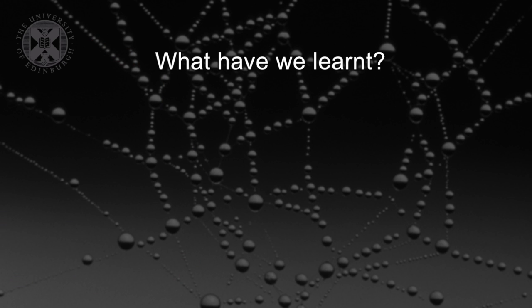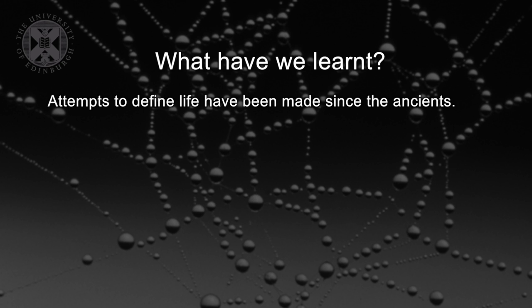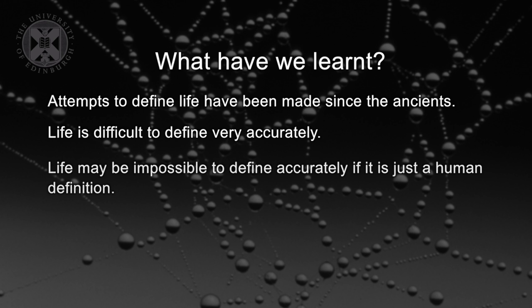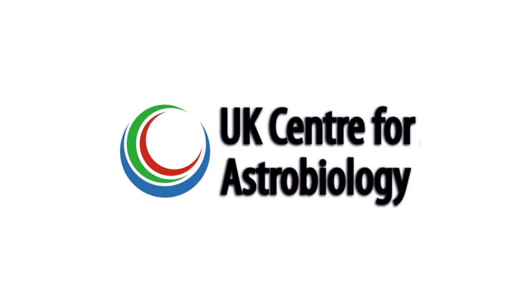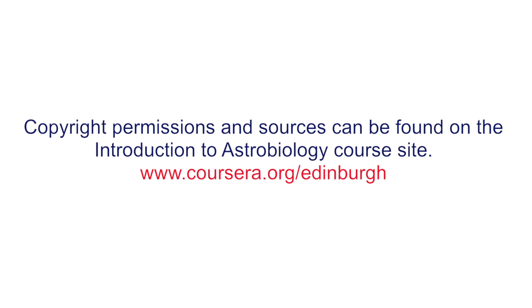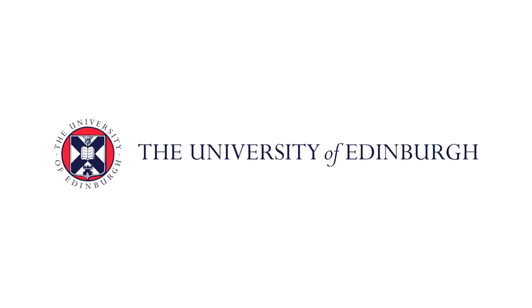So what have we learned? We've learned that attempts to define life have been made since the ancients, and that it's very difficult — perhaps impossible — to define life accurately if it's just a human definition. Despite that, we can develop working definitions of life that are useful in astrobiology and define what we're searching for on other planets. But we need to be cautious and keep an open mind to the possibility that there might be types of life that don't quite fit our own definition.